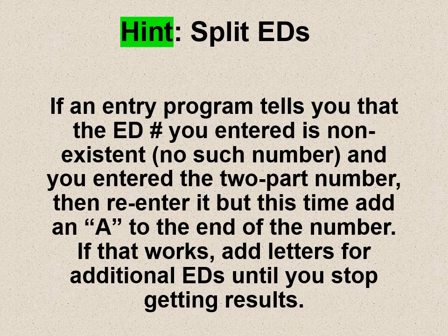Here's a hint: if an entry program tells you the ED number you entered is non-existent and you entered the two-part number, then re-enter that two-part number but add a capital A to the end. If you get results, look to see if your address is there. Then put in that number with capital B, look at that, capital C, and so on, until you either find your address or run out of letters.